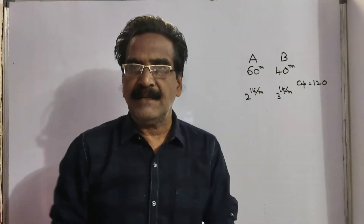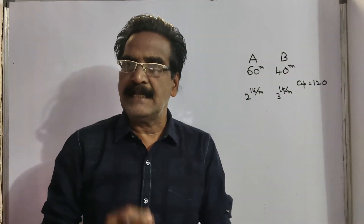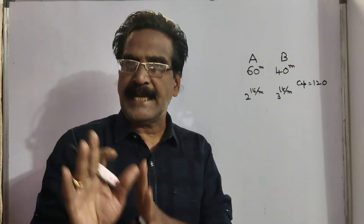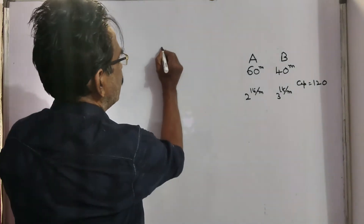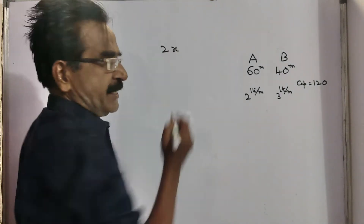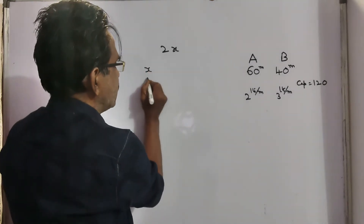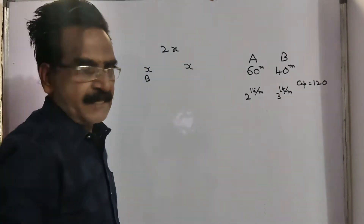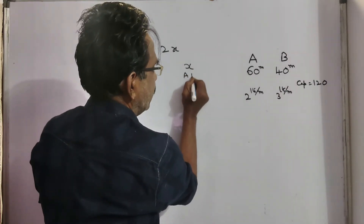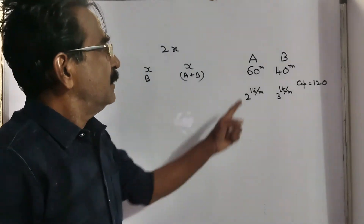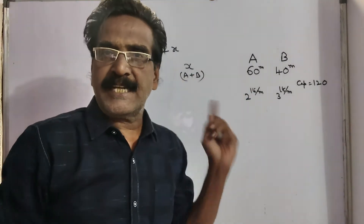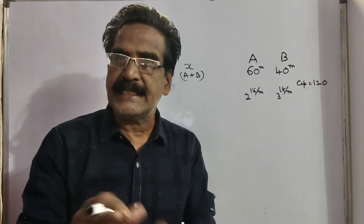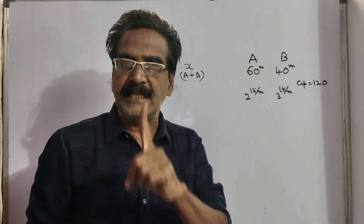Pipe B worked for half of the time and the remaining half of the time A and B worked together. Let us say the total time taken is 2X minutes. In the first X minutes, pipe B works alone. In the second X minutes, A and B together work. What is the capacity of pipe B? It can fill 3 liters per minute.